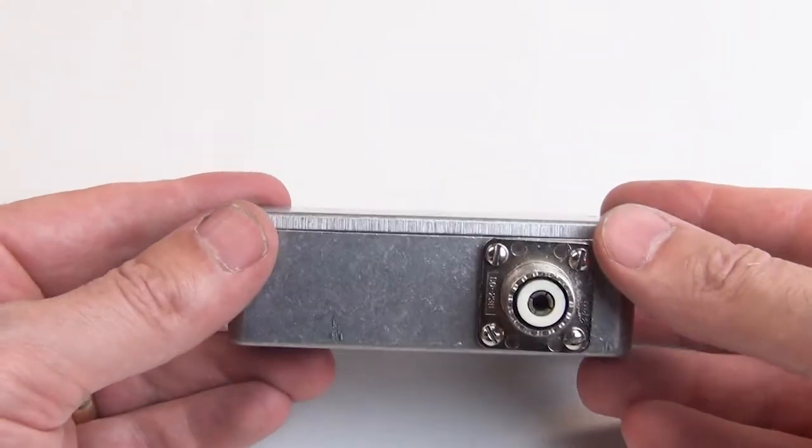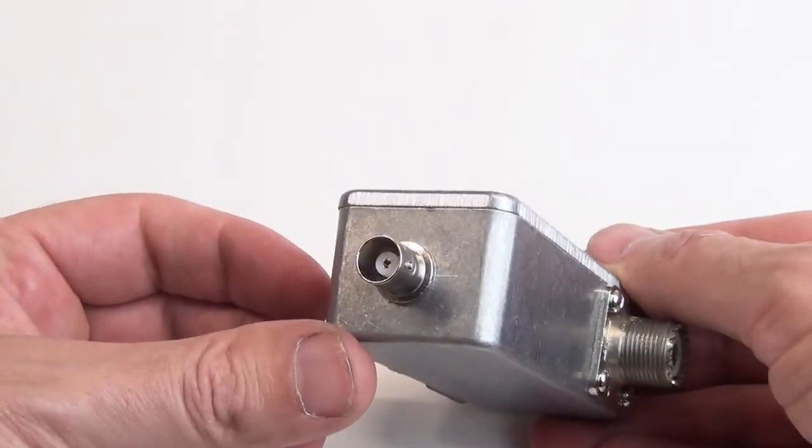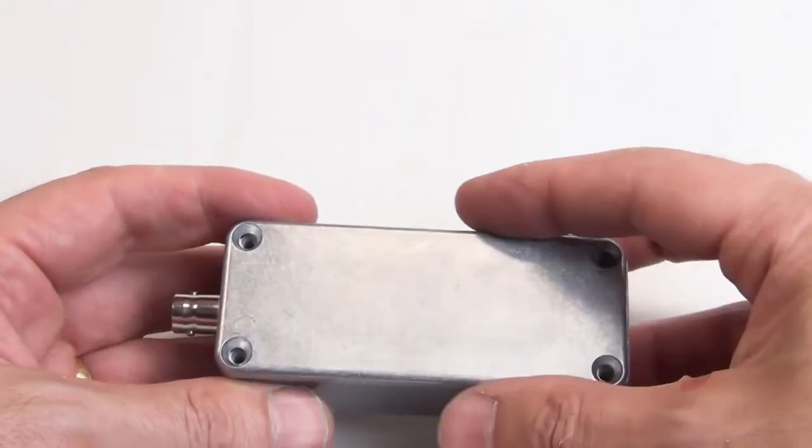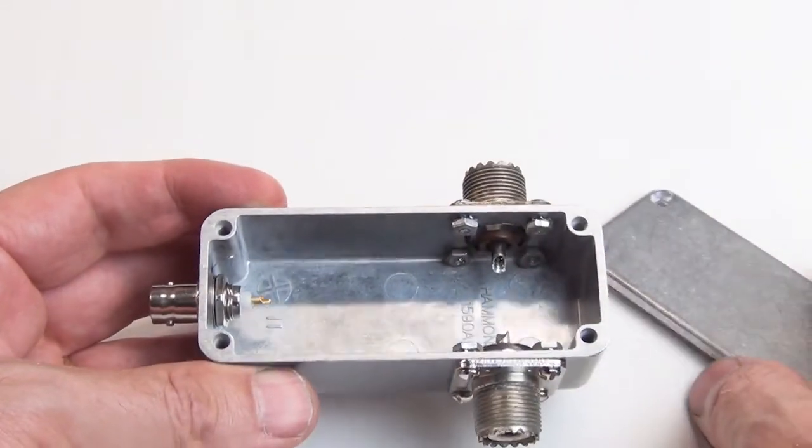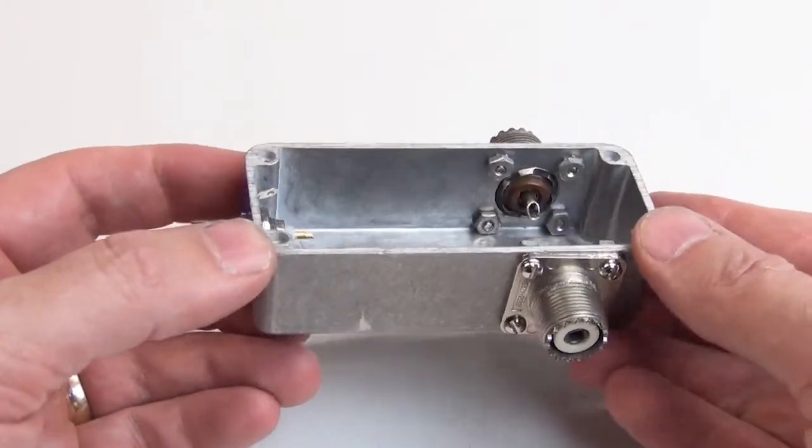And here's the finished mechanical assembly with the three connectors installed. The BNC came with its own mounting hardware, but I had to scrounge around to find eight sets of number four hardware for the two SO239 connectors. The connectors barely fit to the height of the housing. In fact, I had to file down the flats in the lower row of nuts to get them to fit.